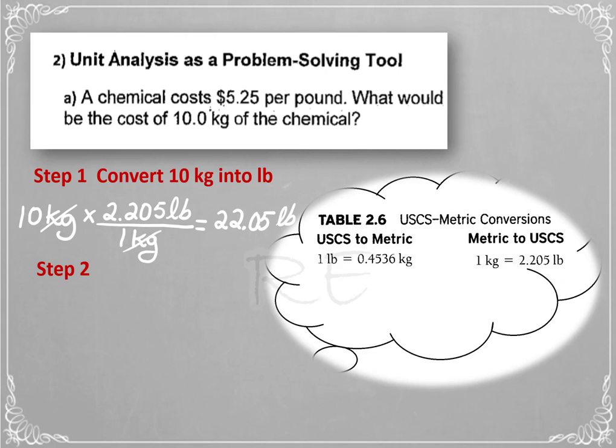Step 2: We will look for the cost of the chemical. $5.25 per pound divided by 1 pound will be multiplied by the number of pounds in 10 kilograms, which is 22.05 pounds.